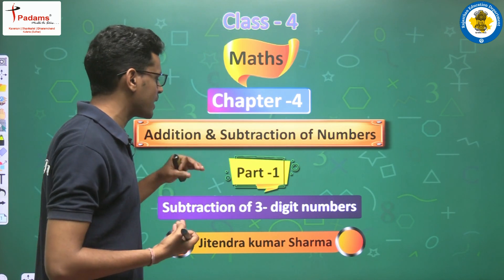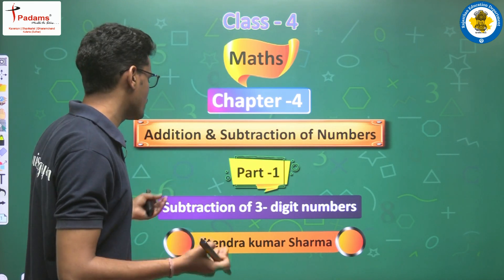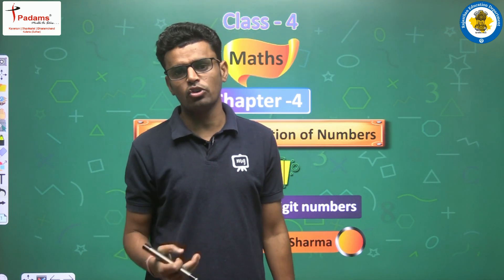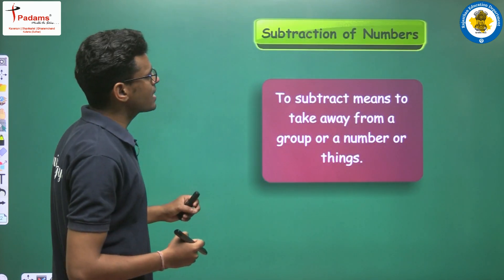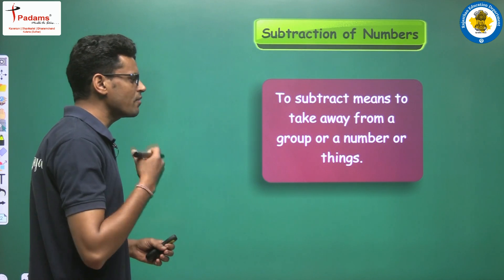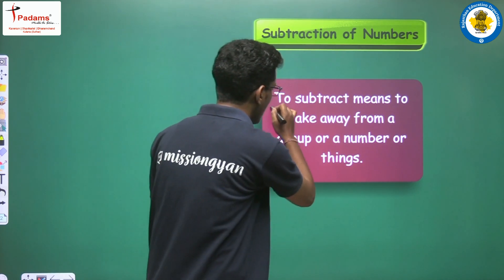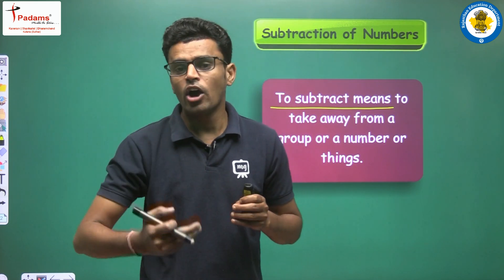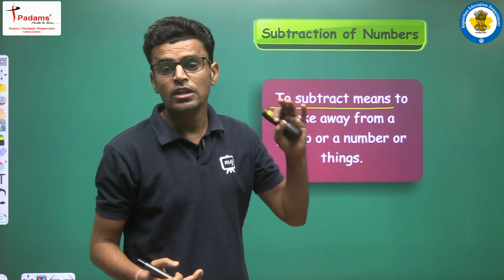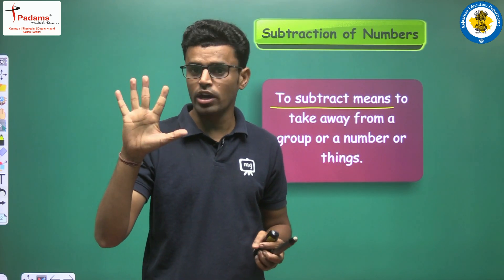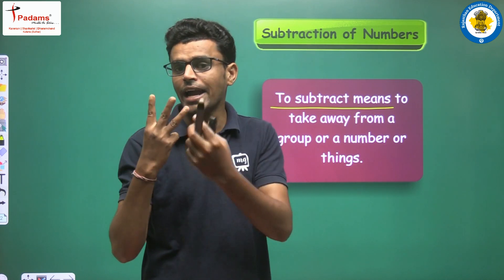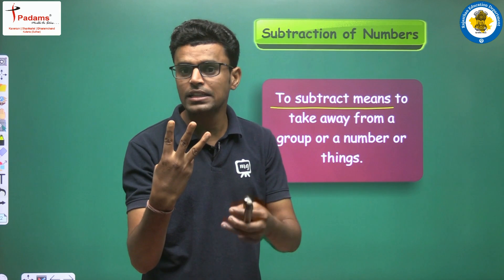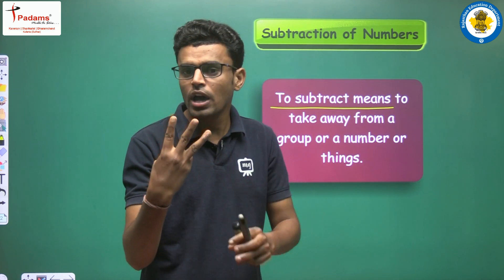We will now learn about the subtraction of three-digit numbers. So let's see three-digit numbers subtraction with the basic knowledge of subtraction. Here we have the remaining number, and we have five fingers in our hand. Now I am going to close the remaining amount — that is three fingers. So here we have some amount, and 'less,' 'minus,' 'subtract' — all are the same.